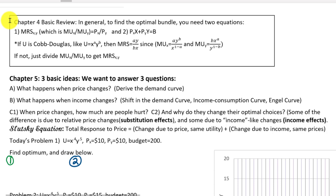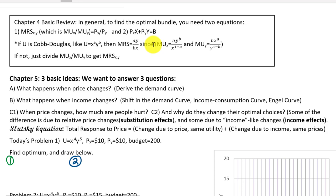Let's do a quick review of ideas from chapter 4. To maximize utility, we're given a budget, the price of x, the price of y, and the utility function. For a Cobb-Douglas function like u = x^a * y^b, the marginal rate of substitution is just the exponent on x times y divided by the exponent on y times x — that's ay/bx — because MRS is the ratio of marginal utility of x divided by marginal utility of y.